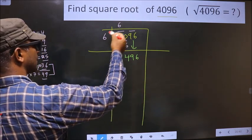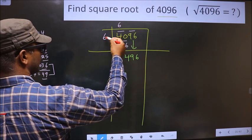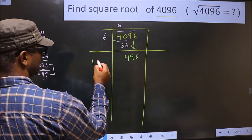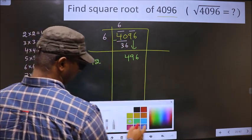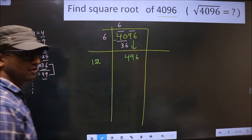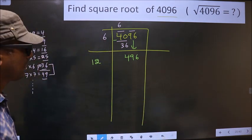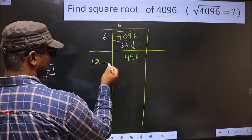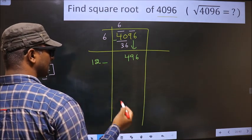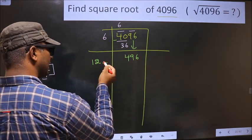Here you should add these two numbers. That is 6 plus 6, we get 12. Next, we should write a number here. The condition is: whatever number you write here...